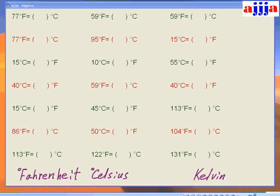That's right — thirty-seven degrees Celsius. That's our body temperature. Next time, we'll talk about Celsius to Fahrenheit.